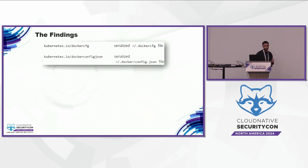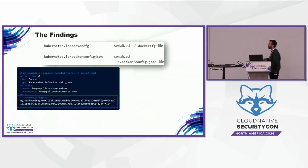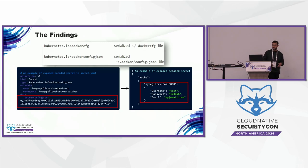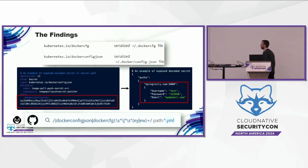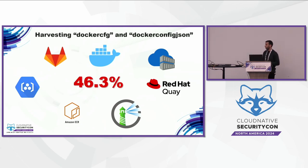This is exactly what we did in our research. We focused on two types of Kubernetes secrets: Docker config and Docker config JSON. This type of secret holds credentials for your container registry — the URL, username, and password. We wrote a detailed regex and utilized the advanced search of GitHub. We were very surprised by the results: we found a lot of exposed secrets from many companies in their container registry, and 46% of them were valid.